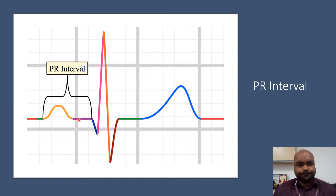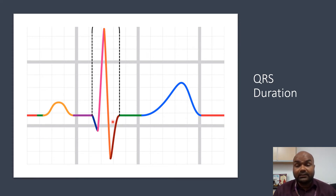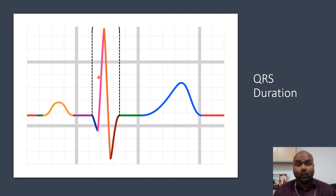Next, let's look at the QRS duration. The QRS duration shows the movement of conduction from the AV node, to the bundle of His, to the Purkinje fibers, and to the ventricles. It represents ventricular depolarization after the AV node. The normal duration of the QRS should be less than three small boxes, or less than 0.12 seconds.